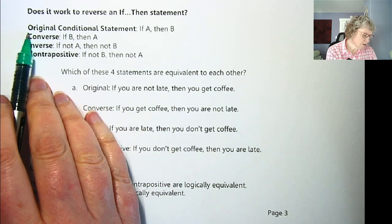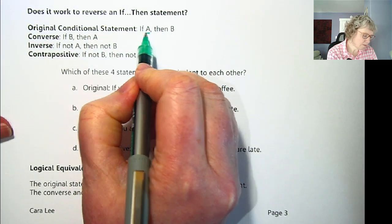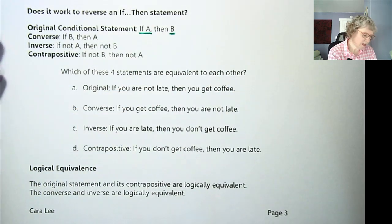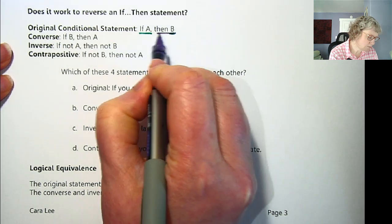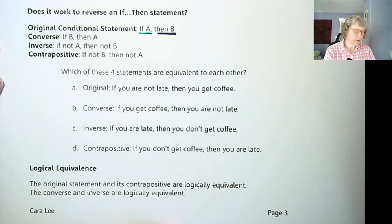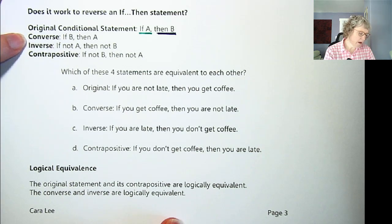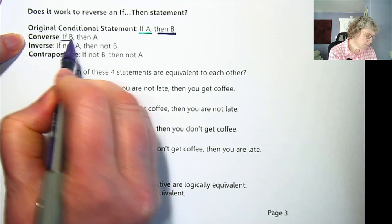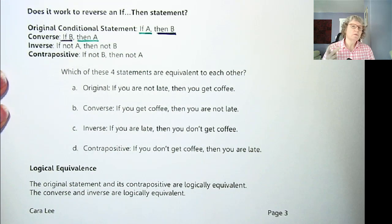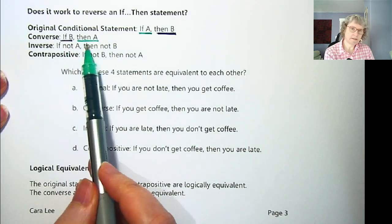Our original conditional statement — we're going to use letters to talk about these different combinations. So if A, then B — that's what we've been talking about, that's our original conditional statement. Now there's a name for these other combinations. The converse is when you switch it around, so you say if B, then A. Notice it's not just switching the order of the if-then — the if is now B and the then is now A.